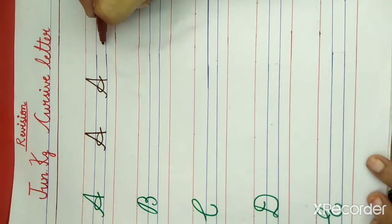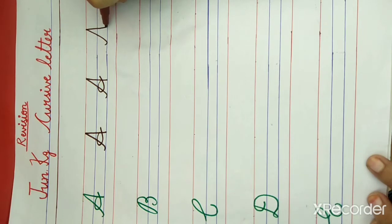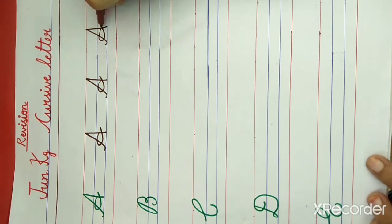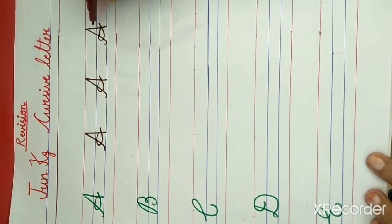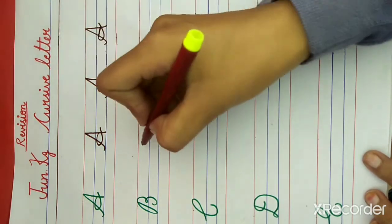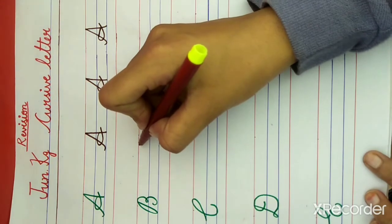Now again draw a slanting line, once more a slanting line, and a loop. A-P-P-L-E. What is this? This is letter A. A for apple. What is the spelling of apple? A-P-P-L-E. You have to remember the spelling of apple.